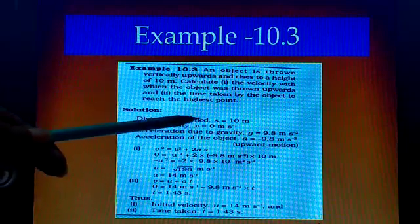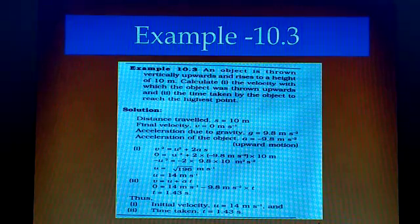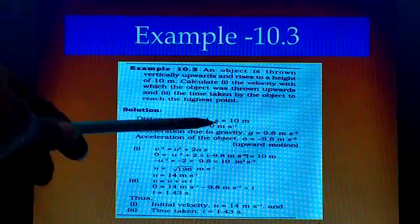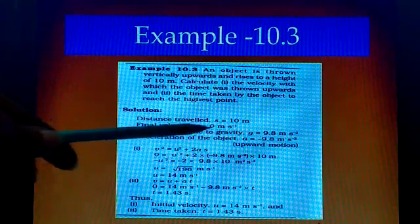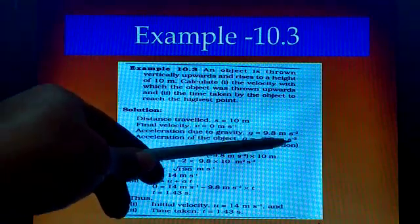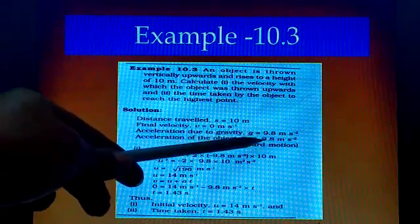Final velocity, when the object reaches the peak point, then final velocity will be 0, so that is 0 m/s. Acceleration due to gravity is 9.8. And here the object is moving upwards, that is why acceleration is minus, negative.